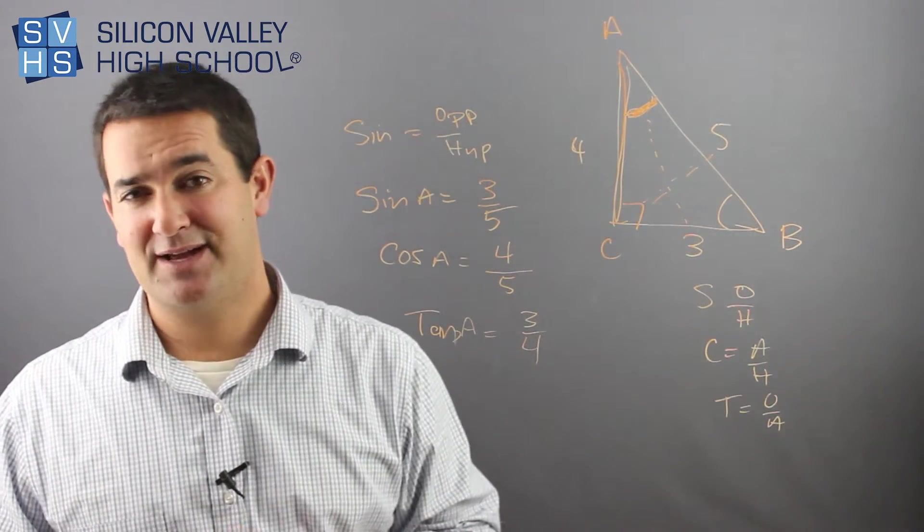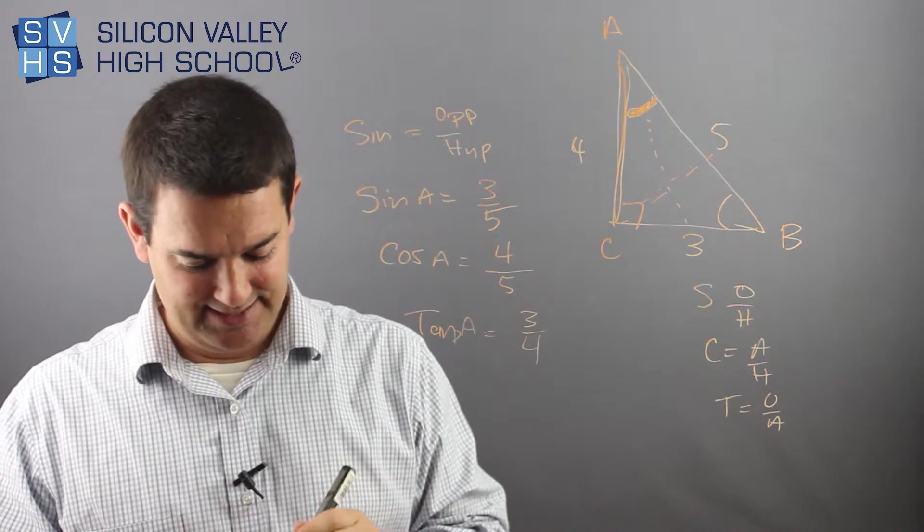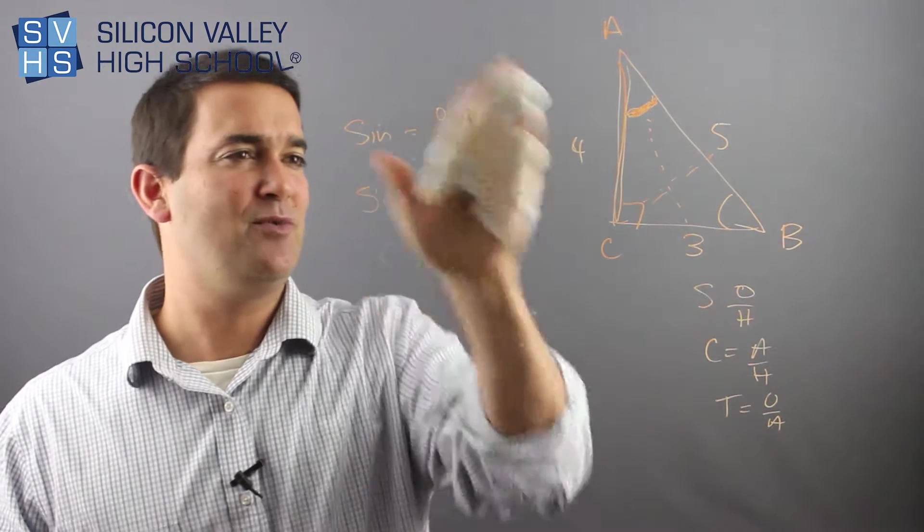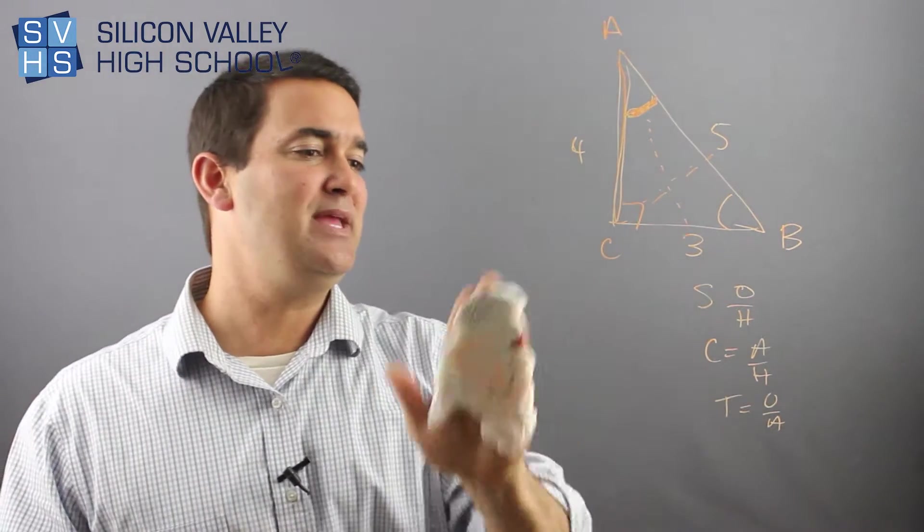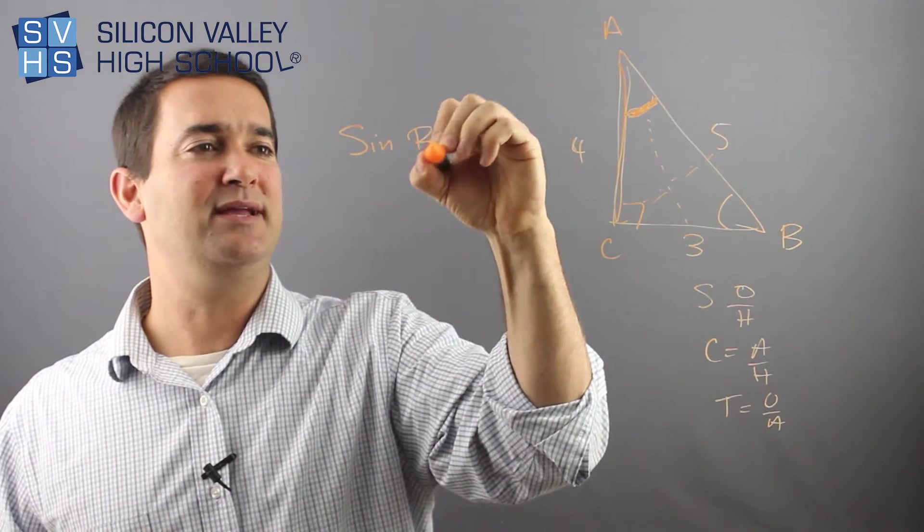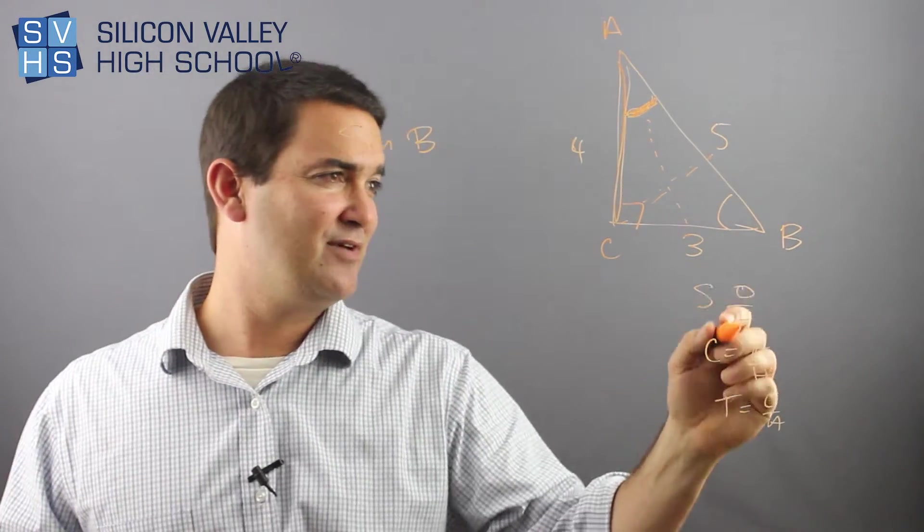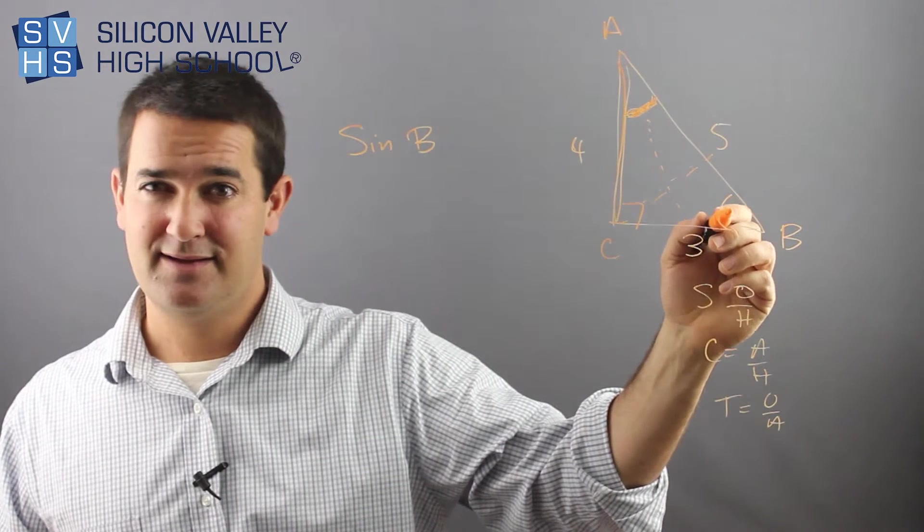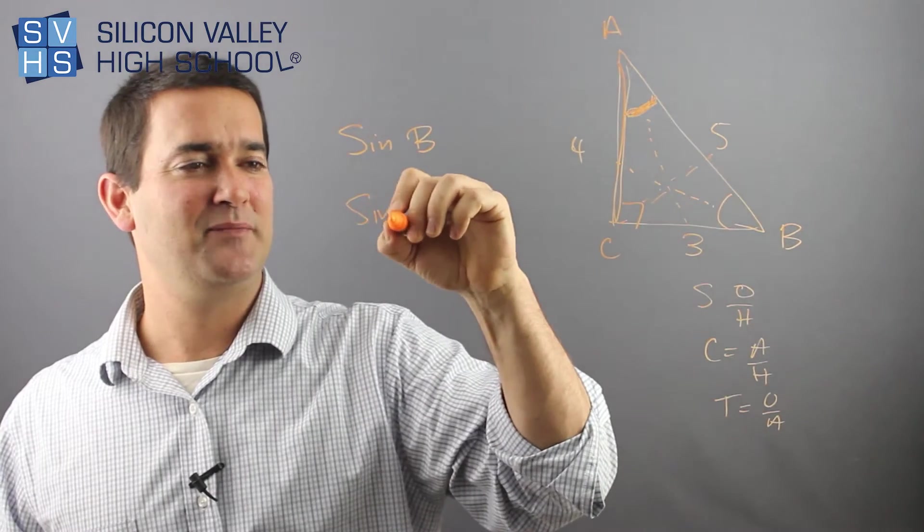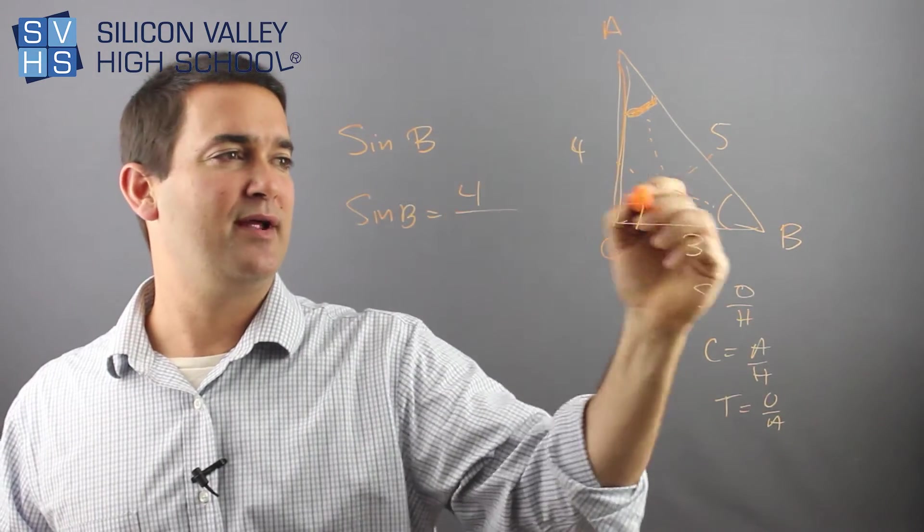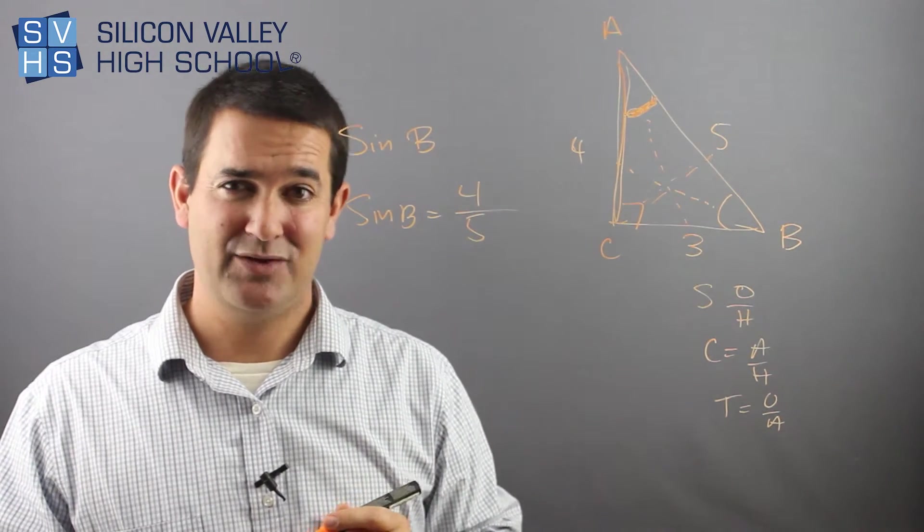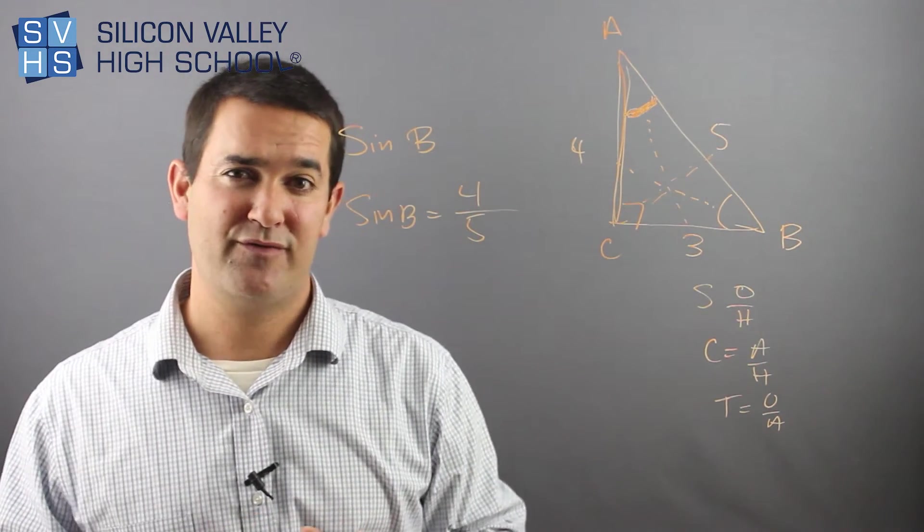The thing about sine, cosine, and tangent that confuses kids is this is not a universal answer because we could do the same thing. And I won't do them all, but we could do the same thing for B, right? Those were all for angle A. What if I said sine of angle B? I know that it's opposite over hypotenuse, but from B, who's opposite? Oh, okay, okay. Now you have sine of B, opposite is 4, and hypotenuse is still 5. That just doesn't change. So again, you know, sine, cosine, and tangent depend on which angle you're referring to.